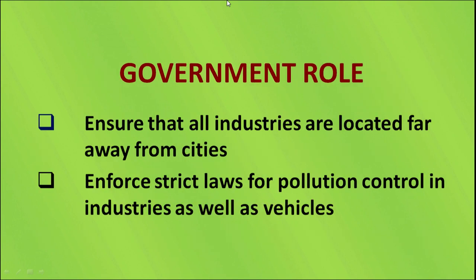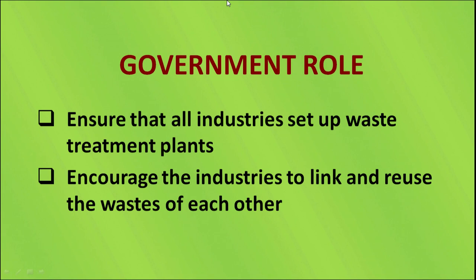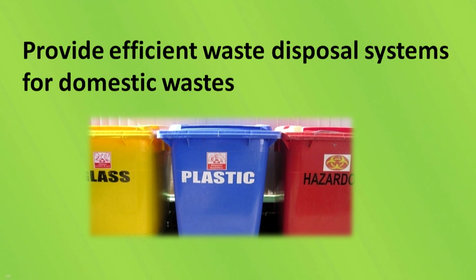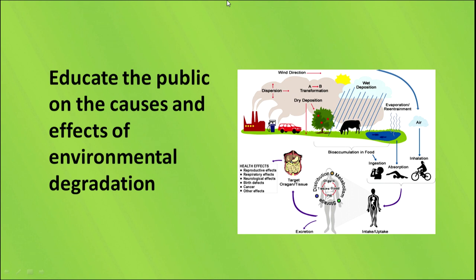Government roles: ensure that all industries are located far away from cities; enforce strict laws for pollution control in industries as well as vehicles; ensure that all industries set up a waste treatment plant; encourage industries to link waste and reuse each other's waste — for example, waste from a steel industry can be used by another industry for smelting of steel; provide efficient waste disposal systems for domestic wastes; and educate the public on the causes and effects of environmental degradation.